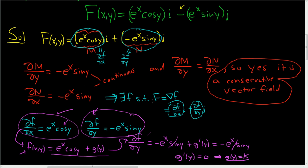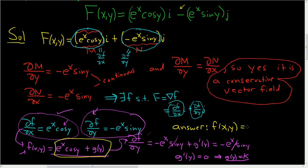Now we can write the final answer. The potential function f of x, y is equal to e to the x cosine y plus k. That is how you find the potential function.